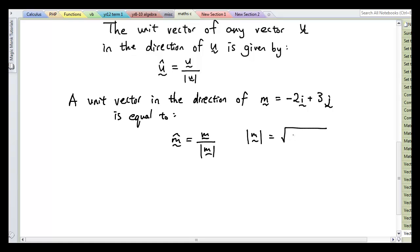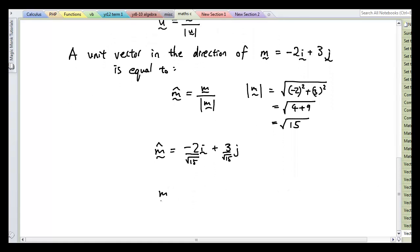So the magnitude is square root of negative 2 squared plus 3 squared. So that's the square root of 4 plus 9 which is the square root of 15. So I'm going to keep it as that. So the unit vector in the direction of m is m which is negative 2i plus 3j divided by the magnitude. So I'm just going to divide each of the coefficients by square root of 15. So to write that properly, the unit vector of m is negative 2 over square root of 15i plus 3 over square root of 15j.